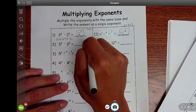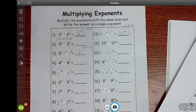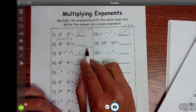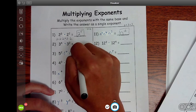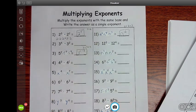2 plus 7 plus 4. 2 plus 7 is 9. 9 plus 4 is 13. So my exponent, my answer is going to be 13.